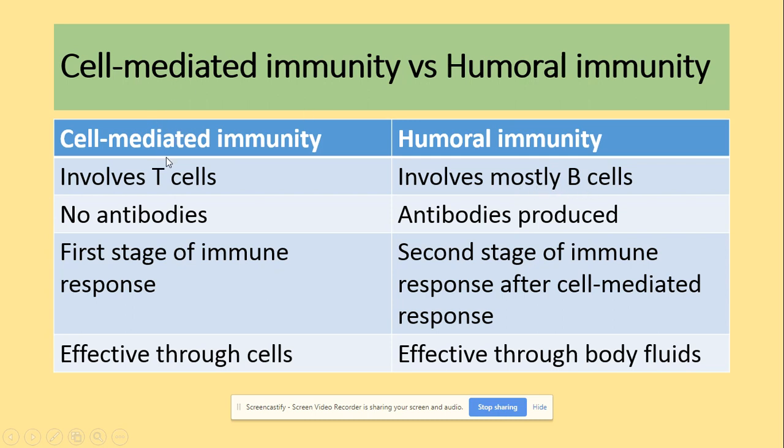In cell-mediated immunity, antibodies are not produced, but they are produced in humoral immunity. Cell-mediated immunity is the first stage of the immune response — we need T cells that will then activate B cells. Humoral immunity is the second stage, after cell-mediated immunity.